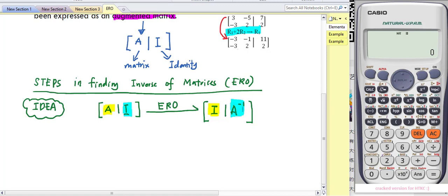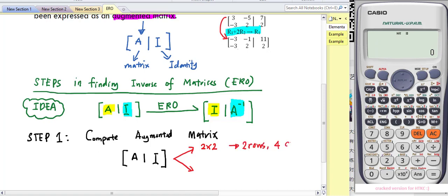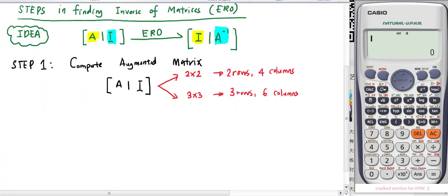Step 1: Write the matrix in augmented matrix form. The augmented matrix form depends on the dimension of matrix A. If matrix A is 2 by 2, we'll have 2 rows and 4 columns. If the dimension is 3 by 3, it will be 3 rows and 6 columns.